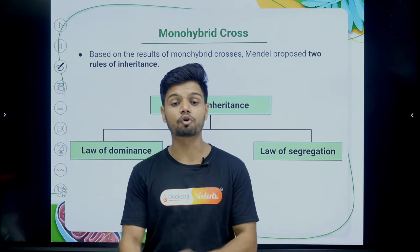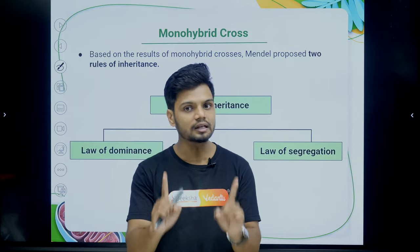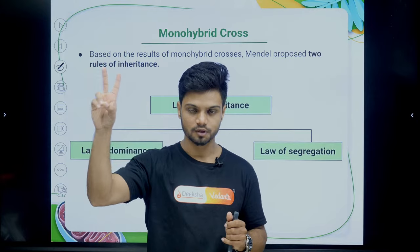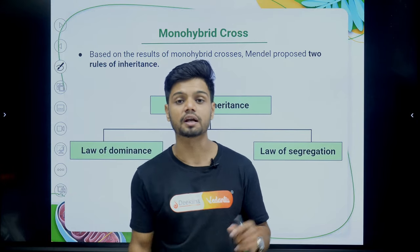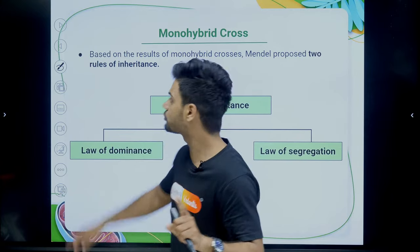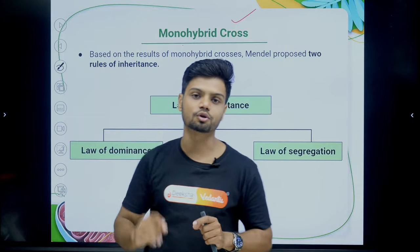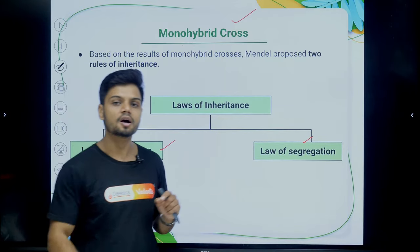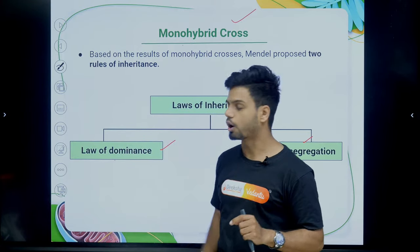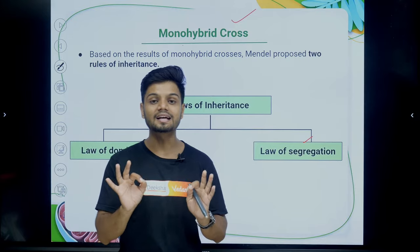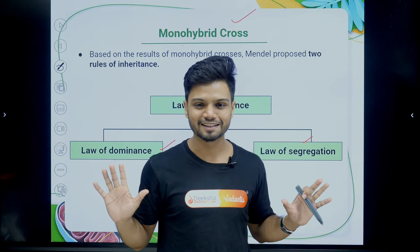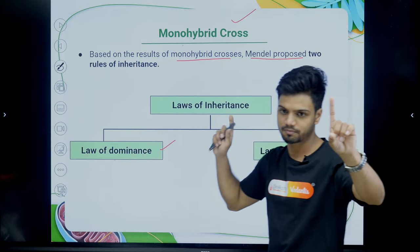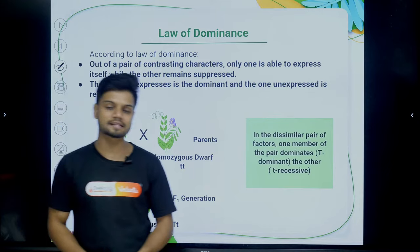From the monohybrid cross, we obtain two different laws. If you get a question in the examination asking which two laws are obtained from monohybrid cross, the answer is: law of dominance and law of segregation. Based on the results of the monohybrid cross, Mendel proposed these two laws.